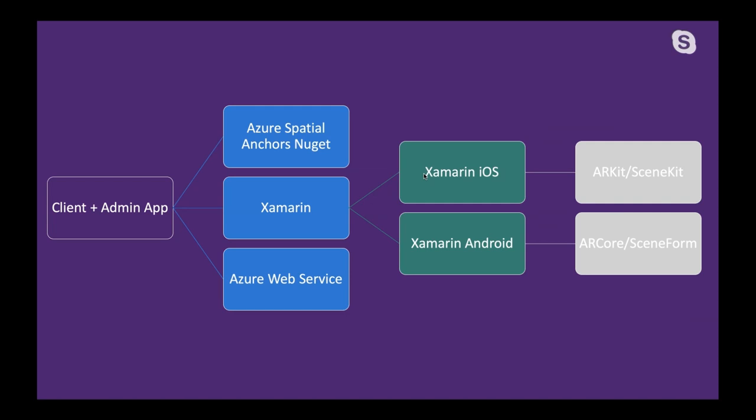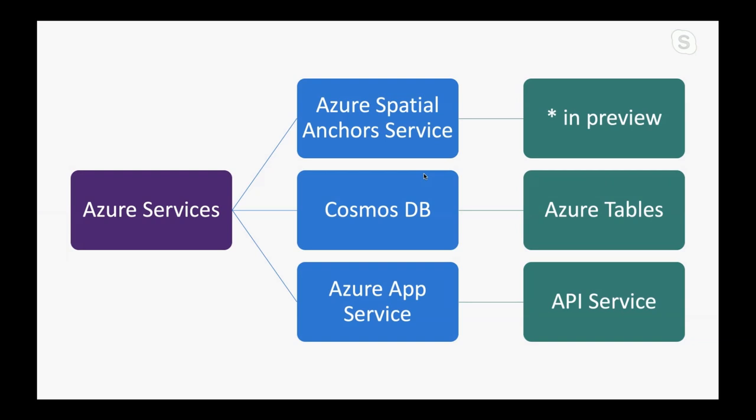Let's see what the web services look like. In Azure, we're setting up three different types of services. First, you'll initialize your Spatial Anchor service — the system is currently in preview and therefore free to use. Second is a Cosmos DB using Azure Tables, which serves two purposes: we need to store the unique key per anchor so every object you create has a unique key stored in these tables, and the rest of the game logic is tied to the Azure Table. Third, we create an Azure App Service which hosts the API that talks to the table.